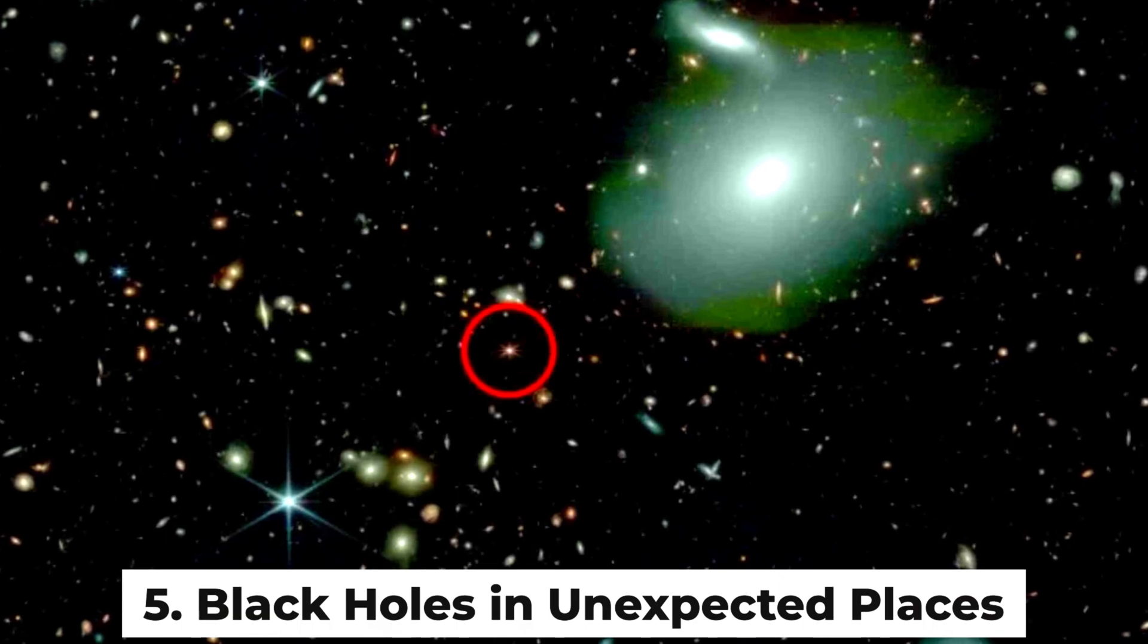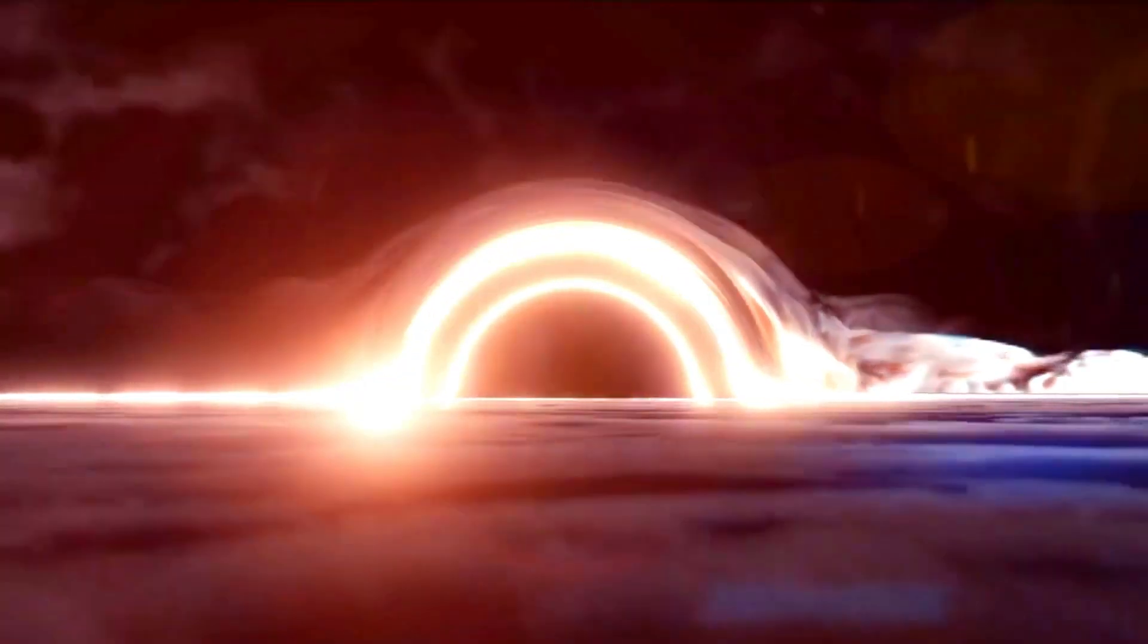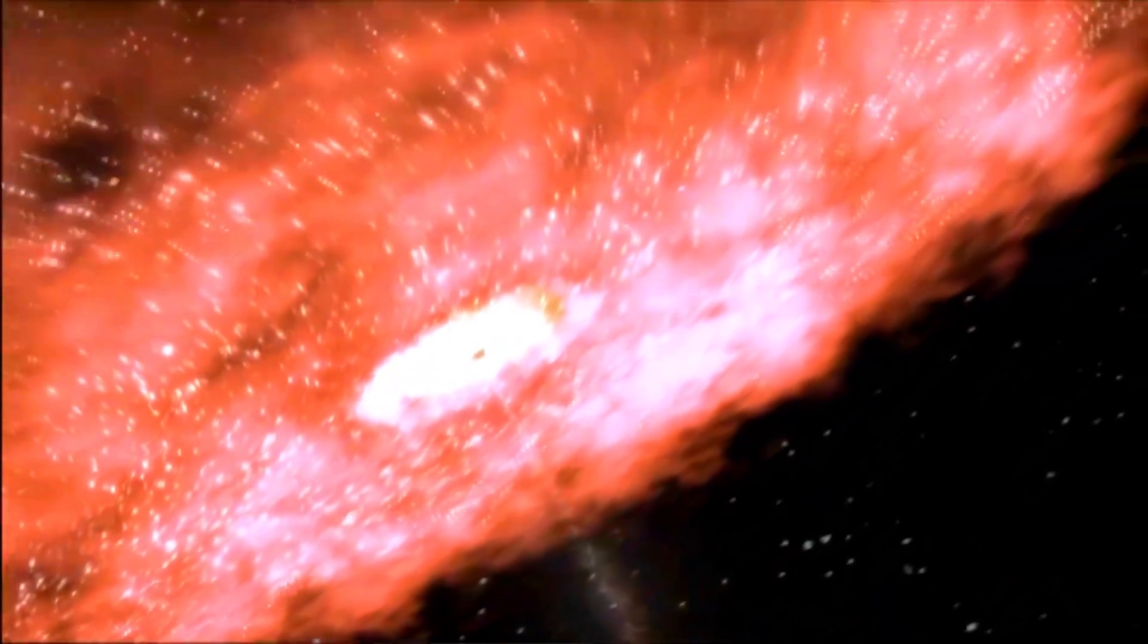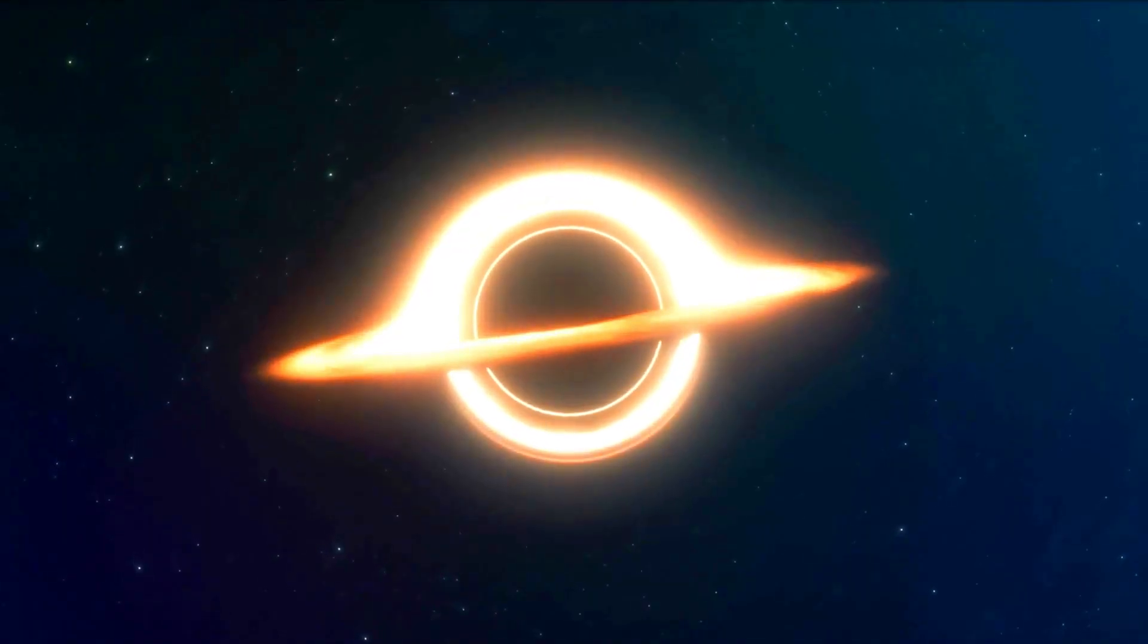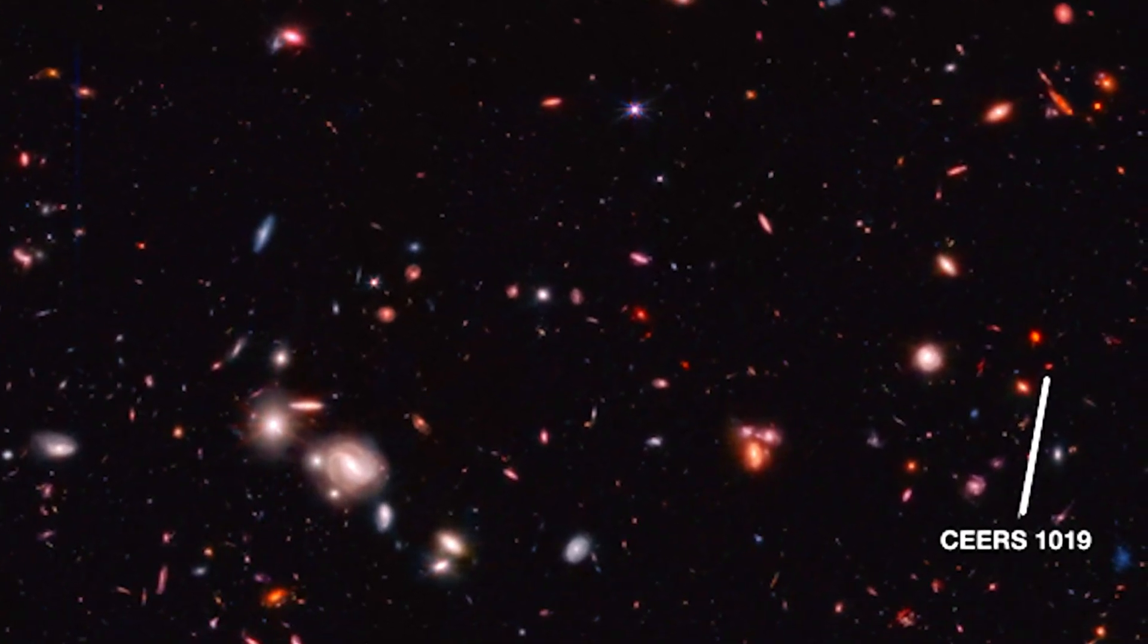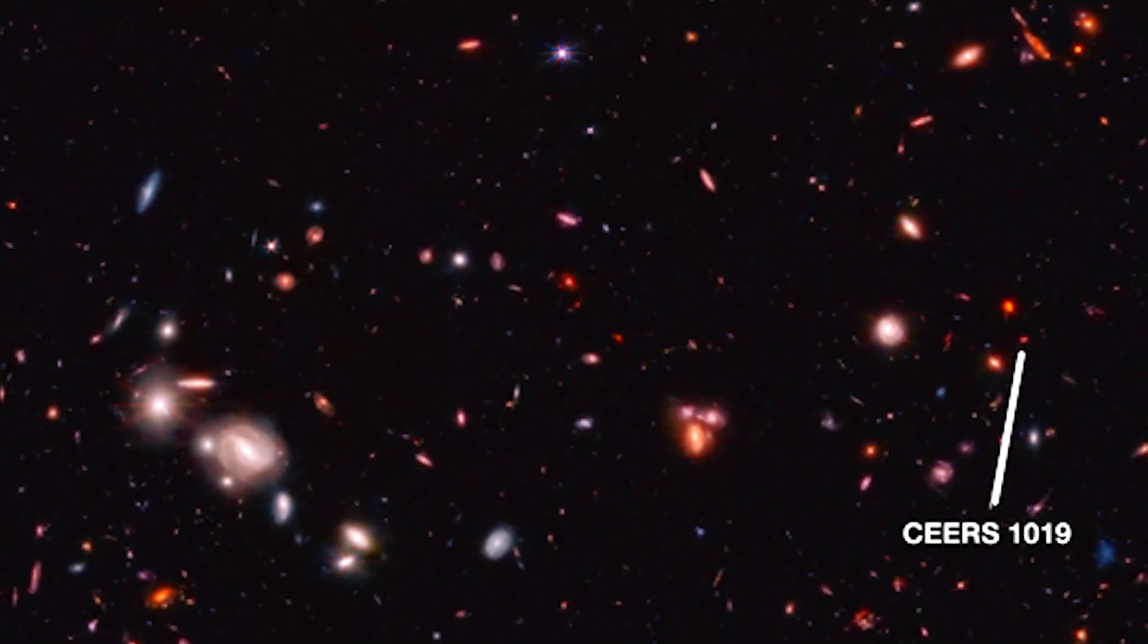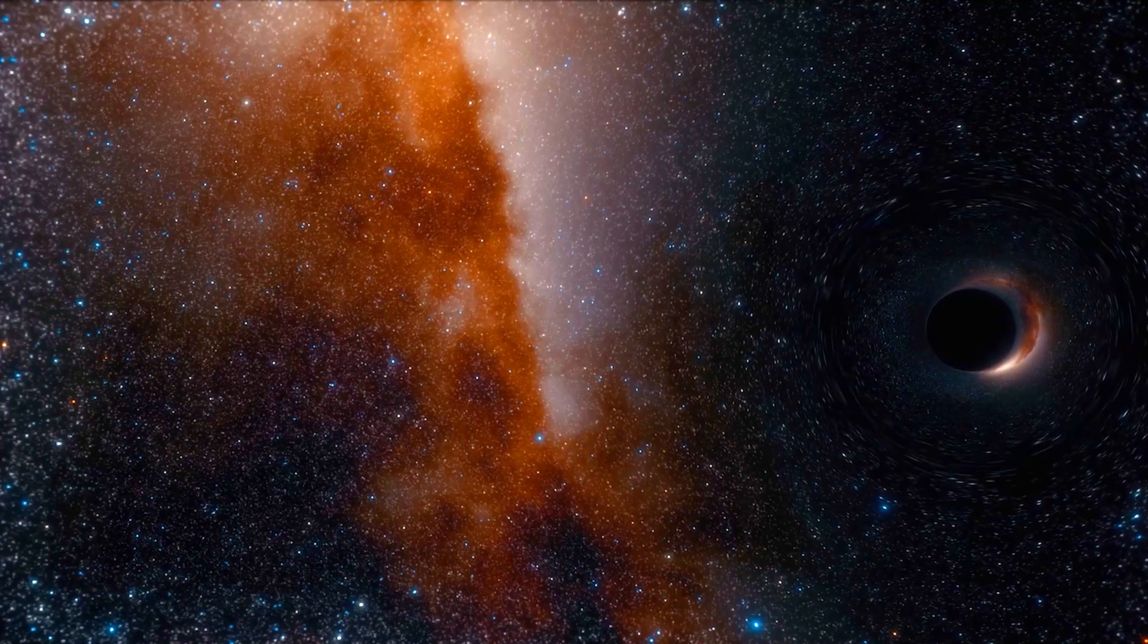Black holes in unexpected places: Until JWST came along, we thought black holes only formed after large galaxies matured. But Webb flipped that idea on its head by finding supermassive black holes inside very young galaxies, some less than 500 million years old. One such galaxy, CEERS-1019, shocked astronomers by harboring a black hole with 9 million solar masses in its center. That's unusually large for such a young galaxy.